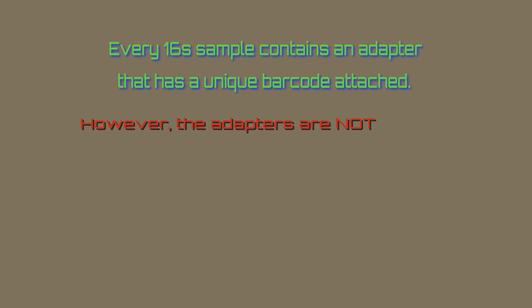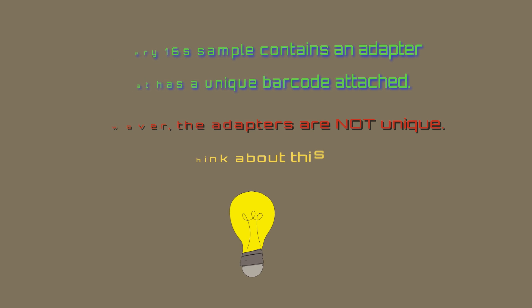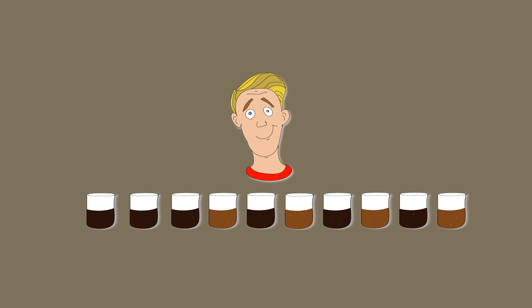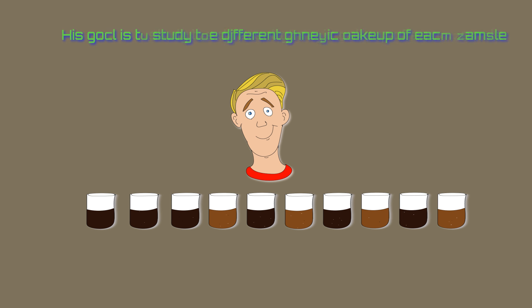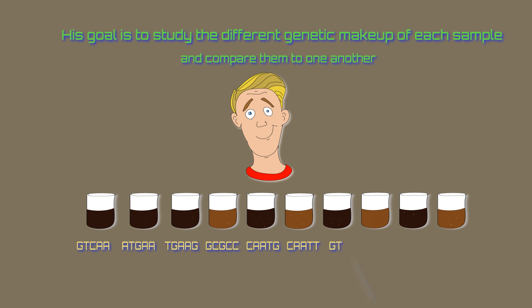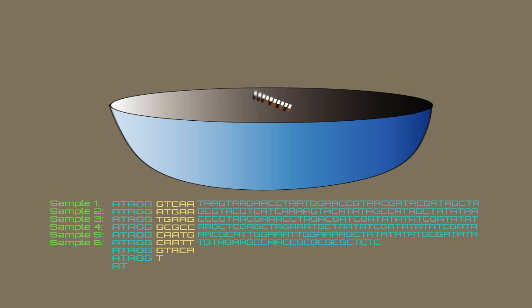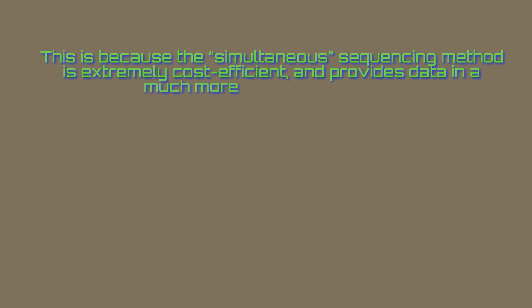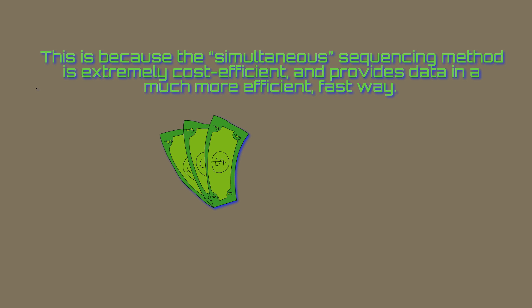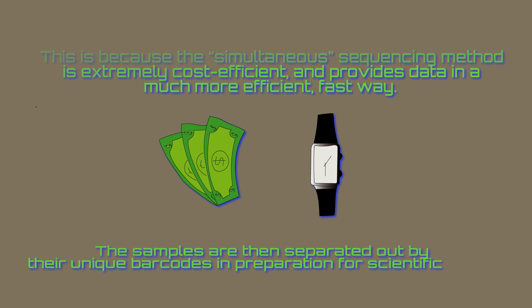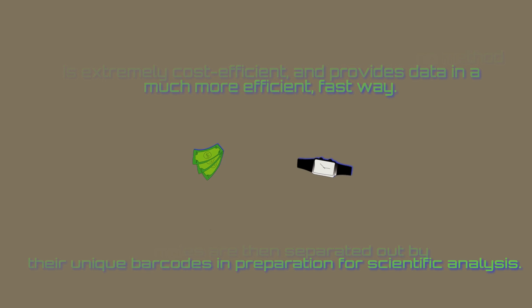However, the adapters are not unique. Say a researcher has 10 different soil samples. His goal is to study the different genetic makeup of each sample and compare them to one another. He would place a different barcode on each sample to help distinguish the samples from one another. Once the barcodes are attached, the samples are then pulled together and sequenced all at once. This is because the simultaneous sequencing method is extremely cost efficient and provides data in a much more efficient, fast way.